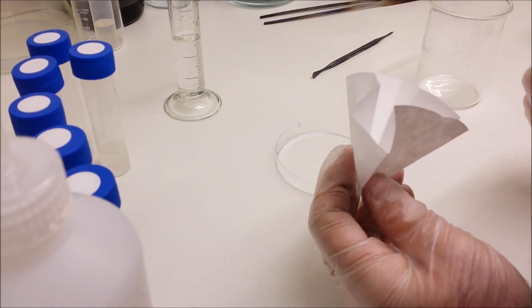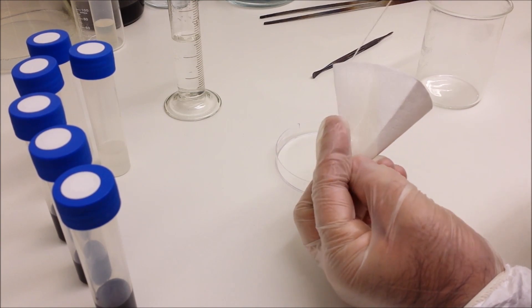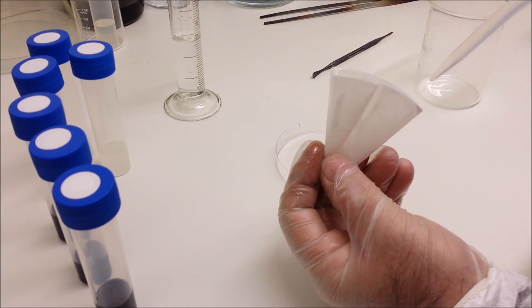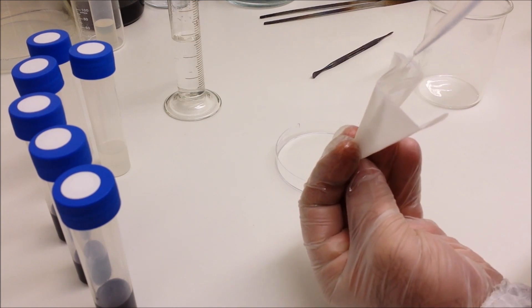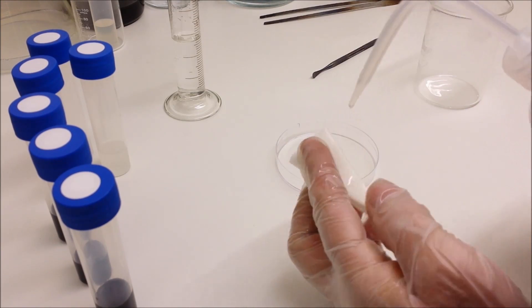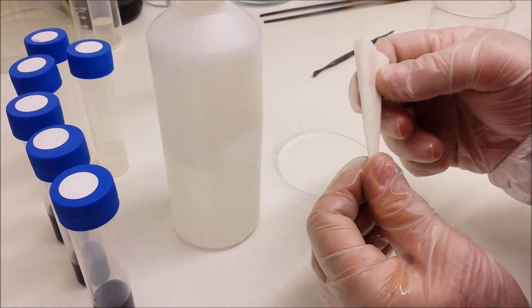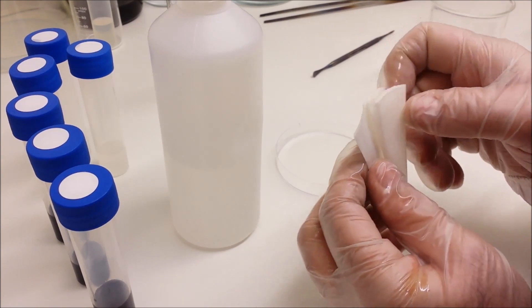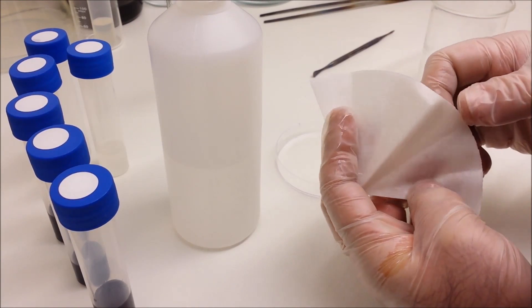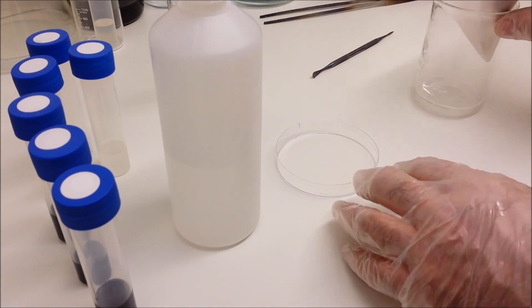Now we need to sterilize this, and what I'm doing is actually just drenching it with IPA. As you can see, it's changing color, so that's thoroughly wetted now. That's now a sterile piece of paper to receive the seeds.